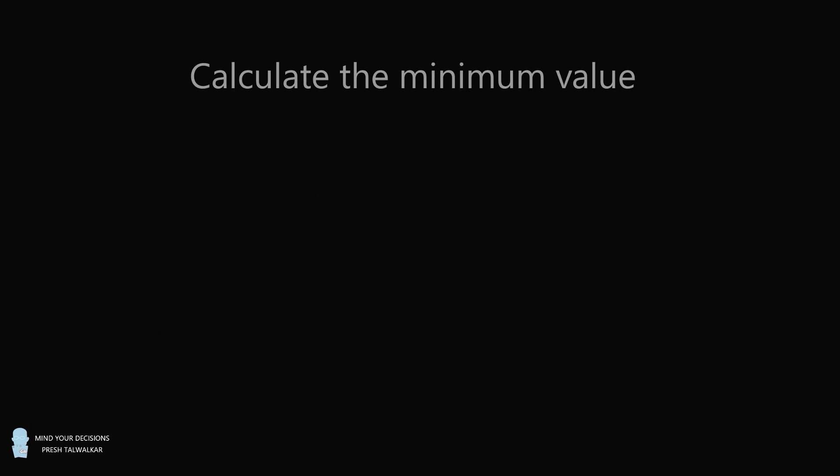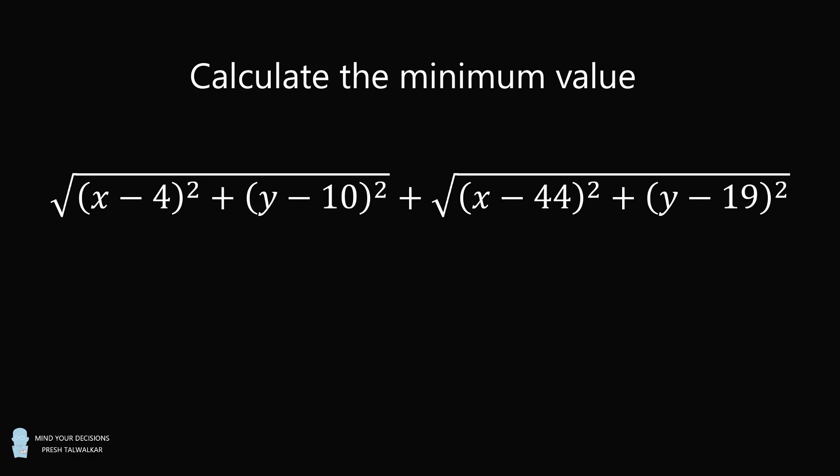Hey, this is Presh Talwalkar. Calculate the minimum value of the square root of the quantity x minus 4 squared plus the quantity y minus 10 squared, plus the square root of the quantity x minus 44 squared plus the quantity y minus 19 squared. This is for real numbers x and y.